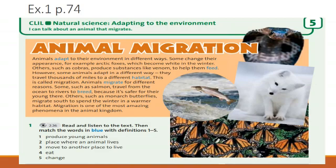Produce substances like venom to help them feed. However, some animals adapt in a different way. They travel thousands of miles to a different habitat. This is called migration.